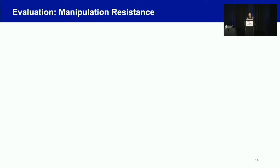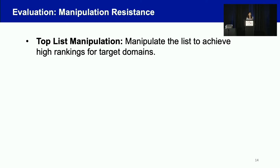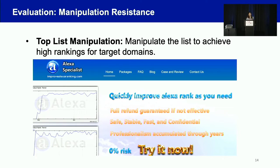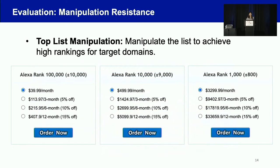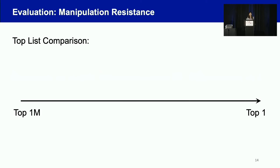Here is the first property: manipulation resistance. Top list manipulation means manipulating the list to achieve high rankings for target domains. Many websites actually offer top list manipulation as a paid service — for example, Alexa specialist websites — indicating that top list manipulation is not just a theoretical threat but happens in practice. So it is very important for a top list to be manipulation resistant. We then manipulated Alexa, Umbrella, and Tranco to compare our performance with theirs.